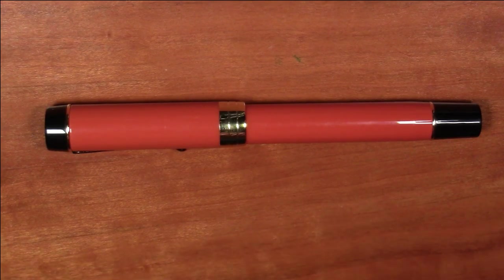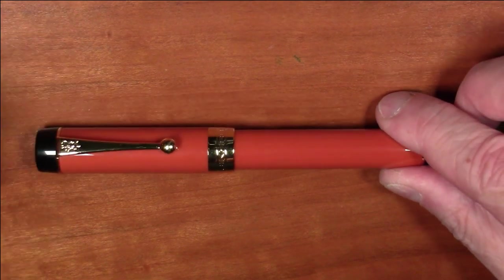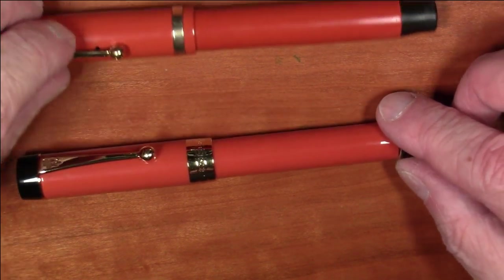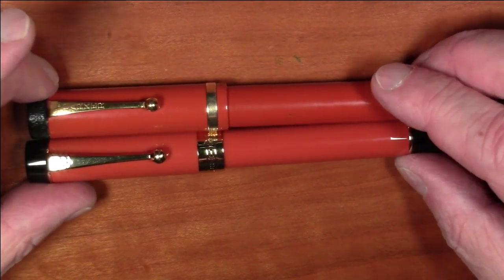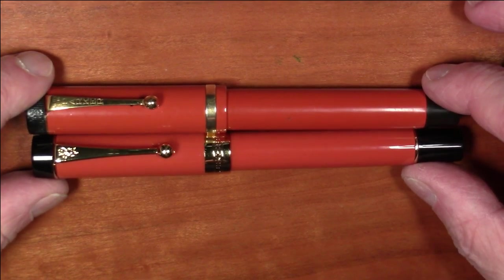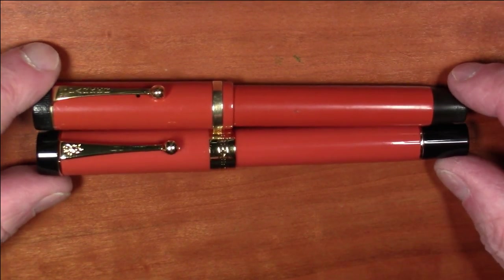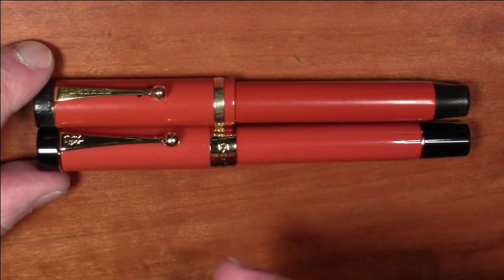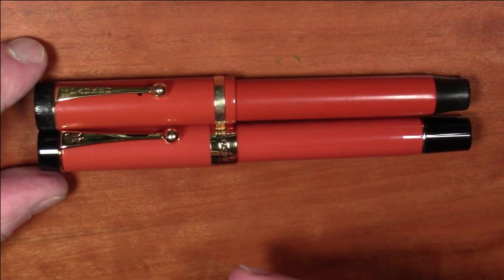Now, those of you who are vintage pen enthusiasts are going to take one look at this and say, hey, wait a minute. Is that a Parker Duofold? And I wouldn't blame you for thinking it looks like one, because here's an actual Parker Duofold from the mid-1920s. So, it's not quite 100 years old, it's about 95 years old or so. And as you can see, both size-wise, color-wise, style-wise, and everything else, this pen is very much meant to emulate a Parker Duofold.